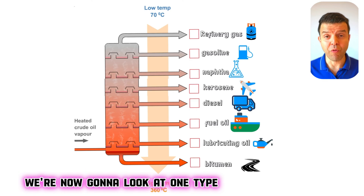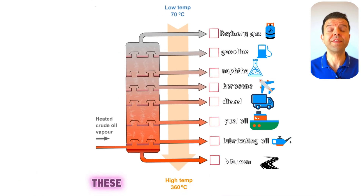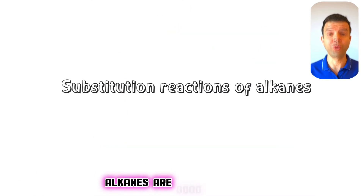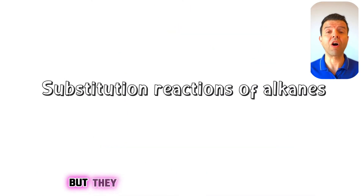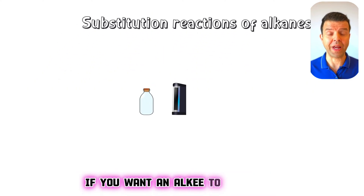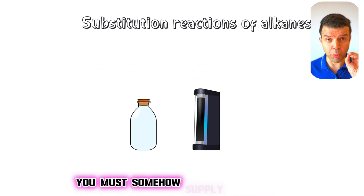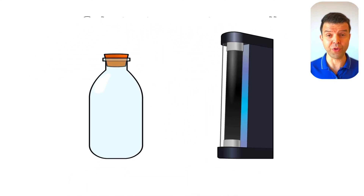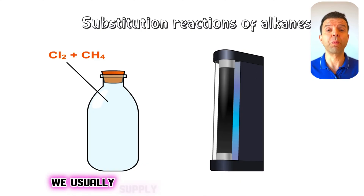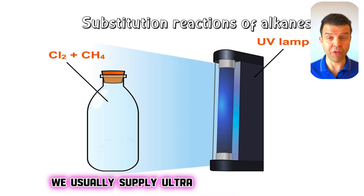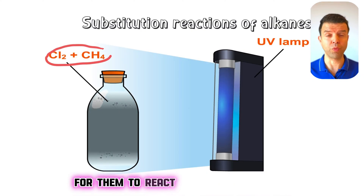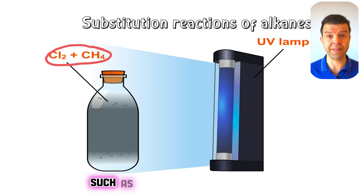We're now going to look at one type of hydrocarbons known as alkanes. Alkanes are good fuels, but they are chemically unreactive. For that reason, if you want an alkane to react, you must supply energy for the reaction to happen. For reactions of alkanes, we usually supply ultraviolet radiation for them to react with chemicals such as halogens.